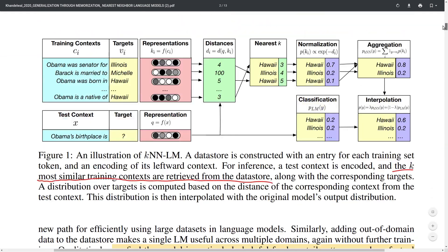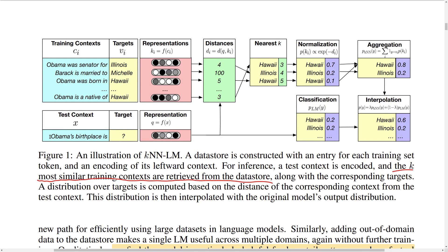Let's go into the details of how this combined language model works. Given an input sequence like 'Obama's birthplace is', a standard language model tries to predict the most likely words to complete the sequence. The standard language model, trained on large amounts of data, generates a probability distribution over its vocabulary — for example, giving a probability score of 0.2 for Hawaii and 0.2 for Illinois.